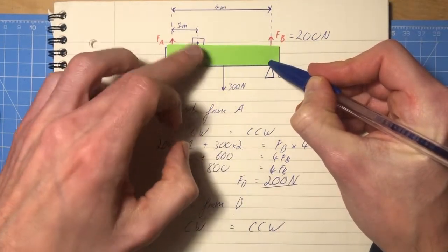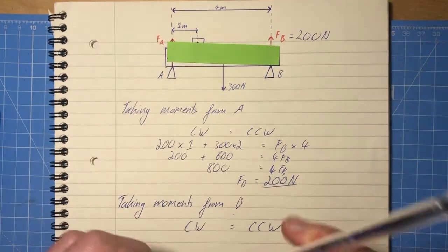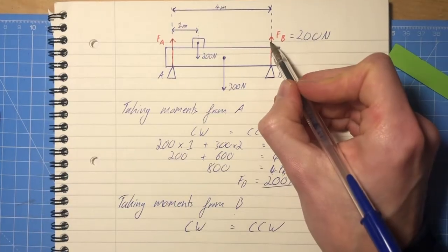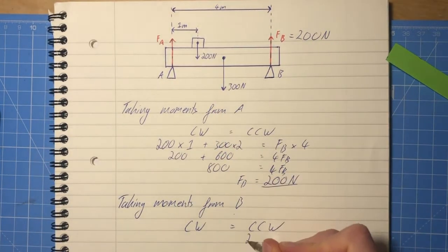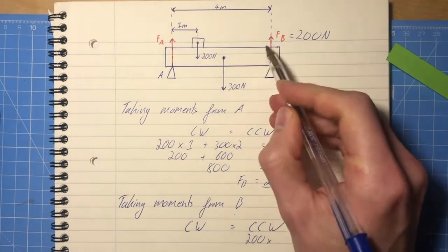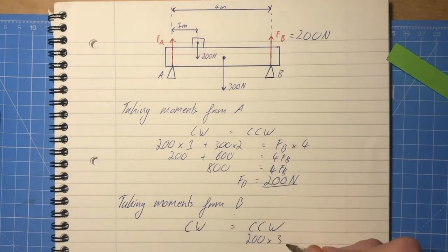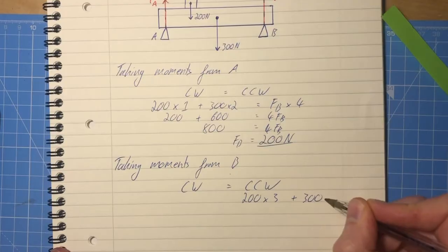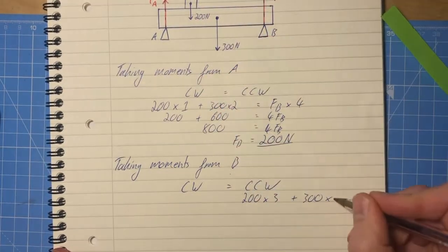Well, the 200 and the 300 are pulling it this way, so that's counterclockwise. So we have, and we're measuring all of our distances by the way from B this time. So 200, 200 newtons, times what this distance is. So 4 meters take away 1 is 3, plus, and then the 300 times, and that distance again is just half of the beam, so that's 2 meters.